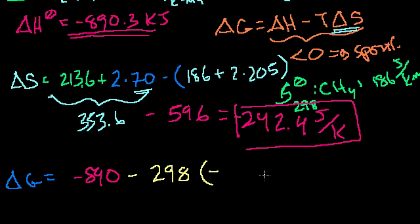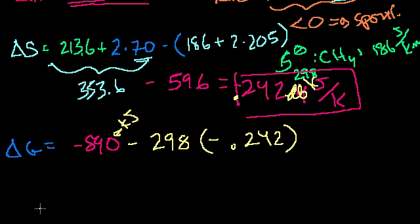This right here is in kilojoules. This right here is in joules. So if we want to write everything in kilojoules, since we already wrote that down, let's write this in kilojoules. So it's 0.242 kilojoules per kelvin. So I could put a 0.242, kilojoules per kelvin.